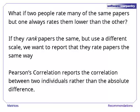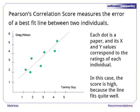One problem with the inverse sum of squares is that it penalizes people for using a different scale. We are really interested in how papers are ranked relative to other rankings, not whether someone is generally harsher than another person. Pearson's correlation score normalizes the data and reports the amount of correlation between scores. Pearson's correlation is related to the line of best fit. In this example, we see high correlation because most papers that were rated highly by Greg were also rated highly by Tommy. If the points were randomly scattered, we would call that low correlation and want to report a low score.